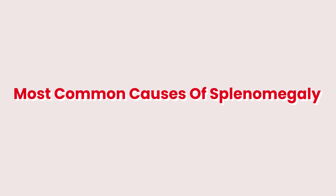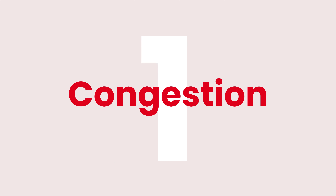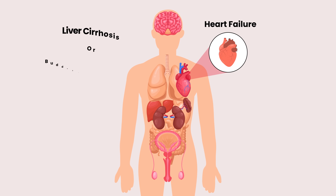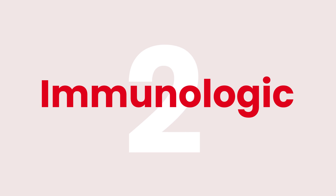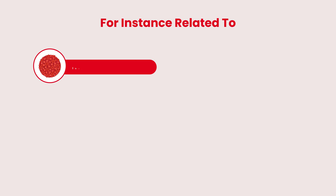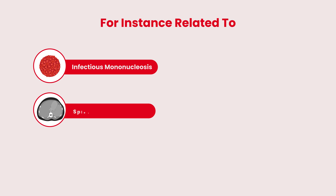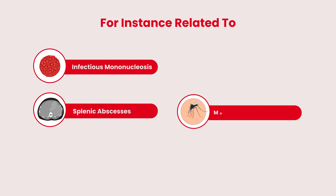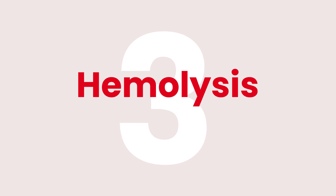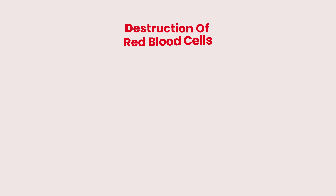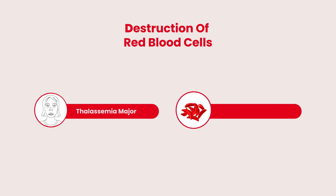The most common causes of splenomegaly are congestion, for example related to heart failure, liver cirrhosis, or Budd-Chiari syndrome, where a thrombus might form in the inferior vena cava or hepatic vein. Immunologic causes include infectious mononucleosis, splenic abscesses, malaria, or systemic lupus erythematosus. Related to hemolysis or the destruction of red blood cells, for instance in thalassemia major and sickle cell disease.